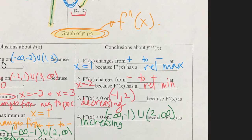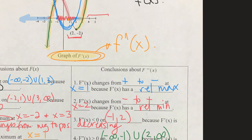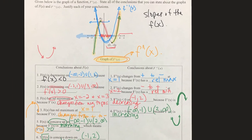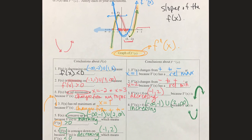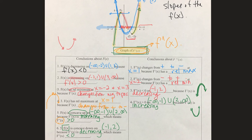When f double prime is negative, the graph of f is concave down. When f double prime is positive, the graph of f is concave up. It's at the points of inflection that it changes from concave up to concave down. These are the connections you should make between f, f prime, and f double prime. Be very careful about which graph they are showing you — this is an f prime graph, not an f graph.